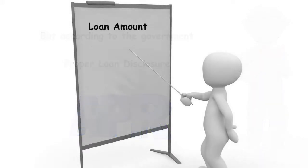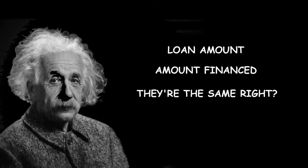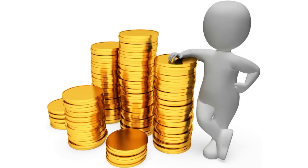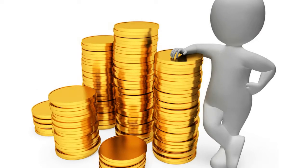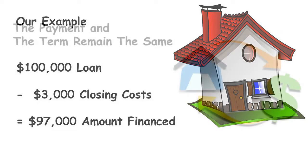Remember that loan amount? We're not going to use that when disclosing this loan. We're going to use a new term called the amount financed instead. You're probably thinking that the amount financed and the loan amount would be the same thing — and you'd be wrong. The amount financed is actually the loan amount minus the closing costs. Keep in mind, if you want to pay off your loan, you'll need to pay off the loan amount, not the amount financed. So in our example, $100,000 minus $3,000 in closing costs equals $97,000 — that's the amount financed.